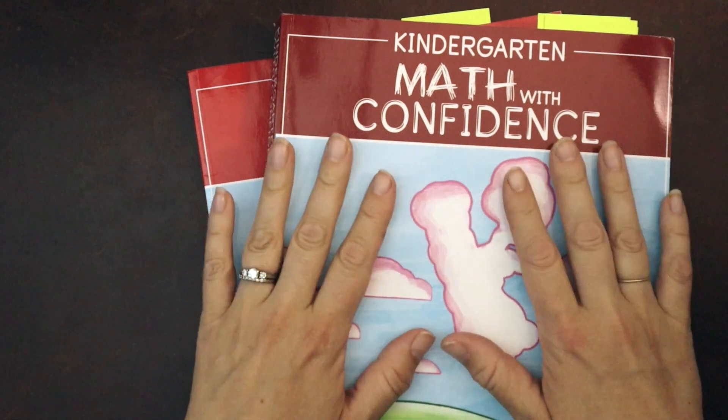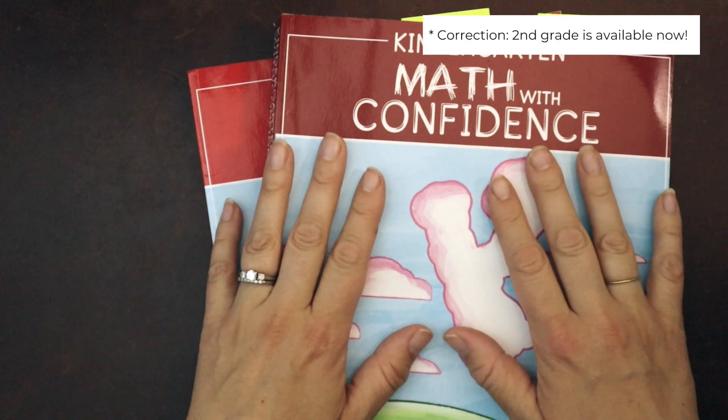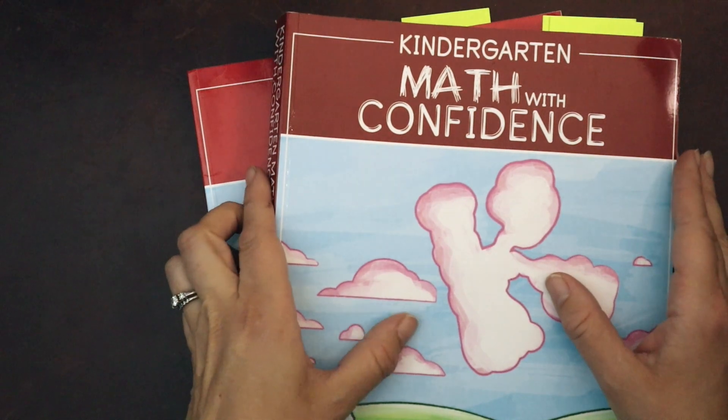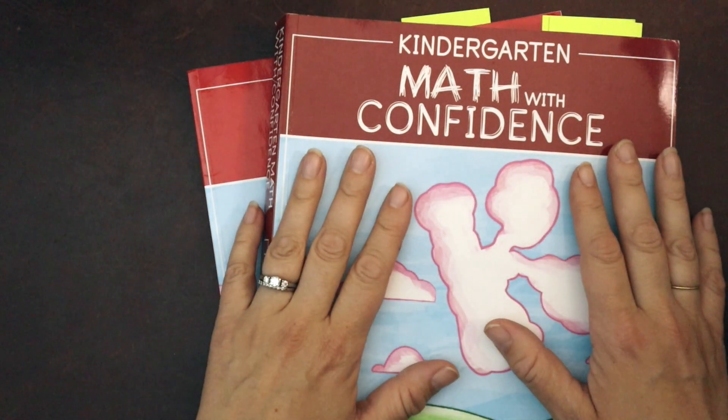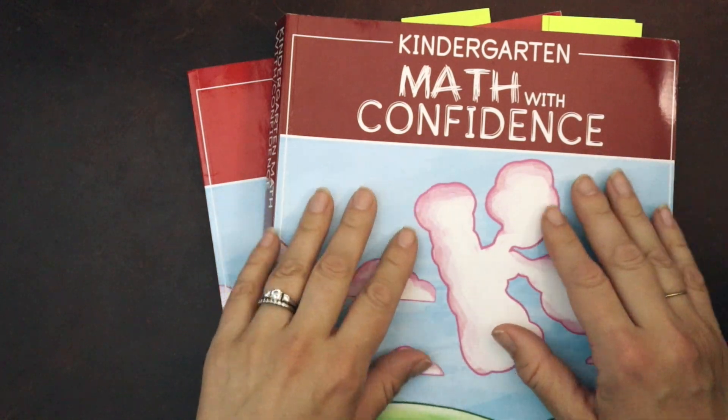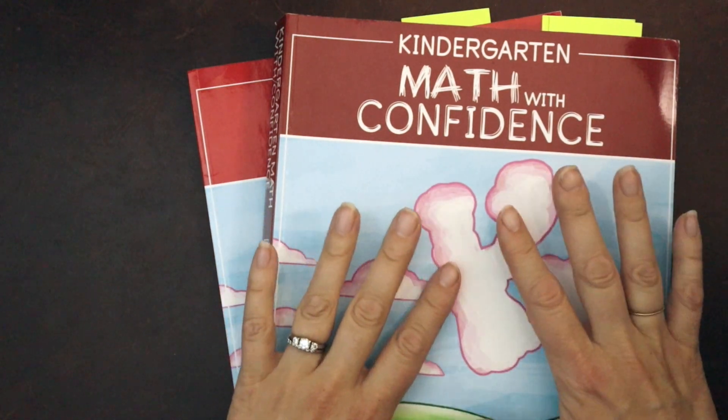So right now kindergarten, first grade are available, and second grade is about to be available. Some of you might know Kate Snow from math facts that stick. There's subtraction and addition and multiplication, all those fact books, and those are a great resource for learning facts with lots of games.